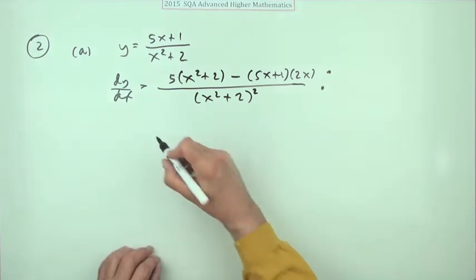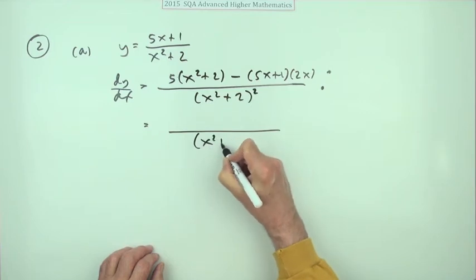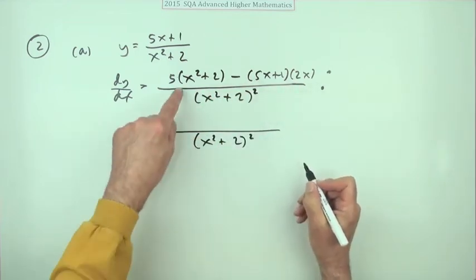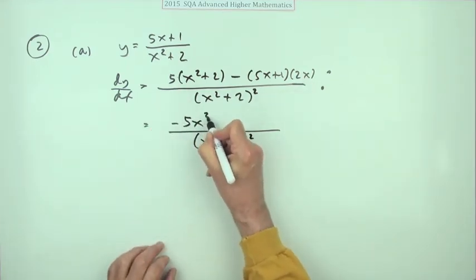And if you do that, that's the second mark, and then the last mark just for tidying that up. So it's going to be all over, and of course maybe something cancels, it depends on the nature of this quadratic on top. You've got 5x squared, take away 10x squared, so that's a minus 5x squared.